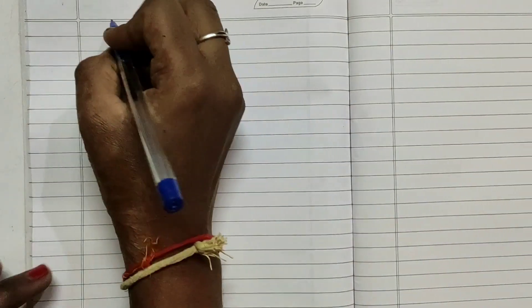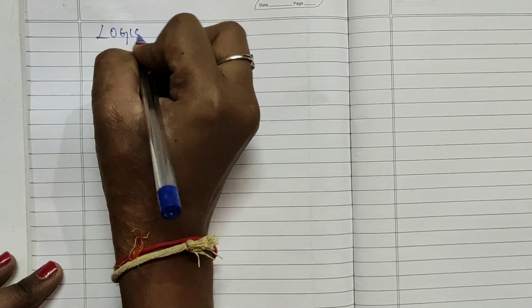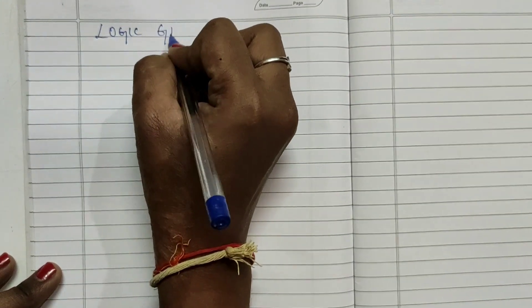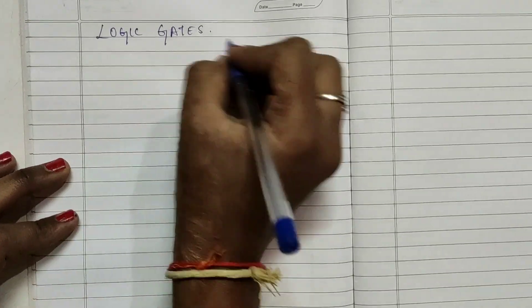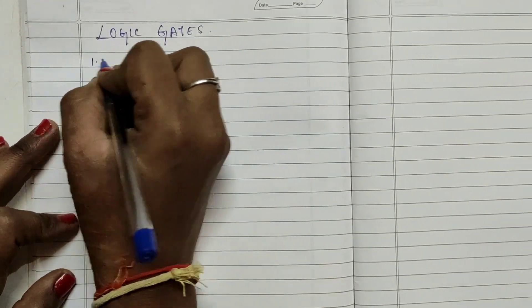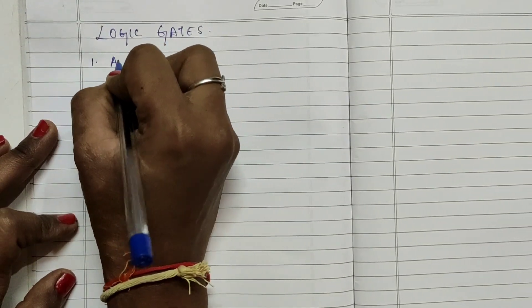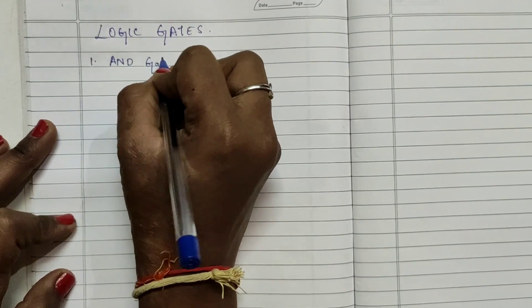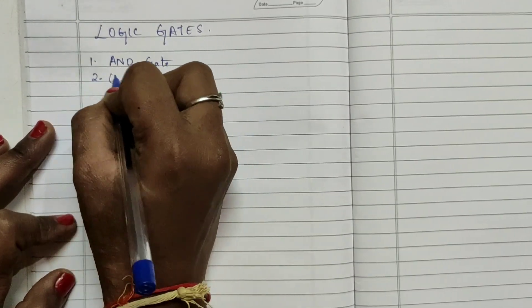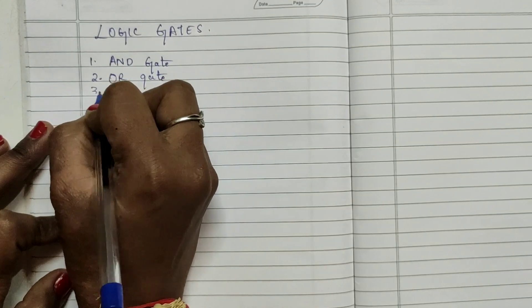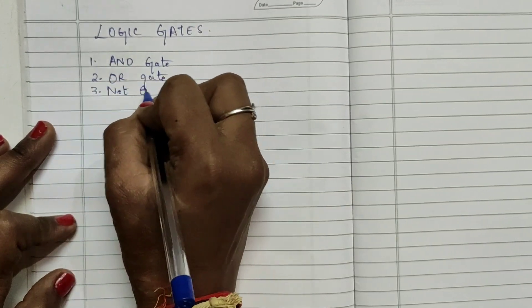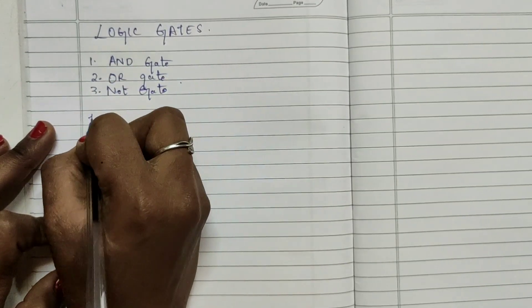Hey guys, welcome back. In this video we'll be learning about logic gates. Like in our previous videos we have seen AND operator and OR operator. We'll be covering three gates: first is AND gate, second OR gate, and third is NOT gate. Let's look into each one by one.